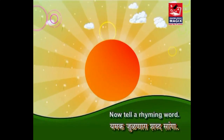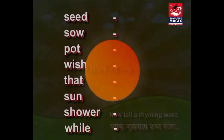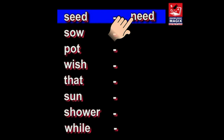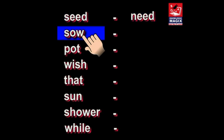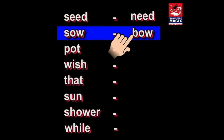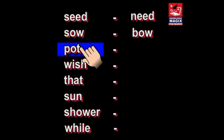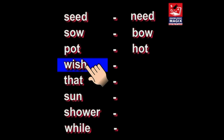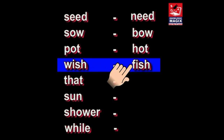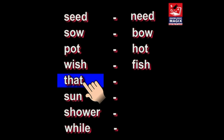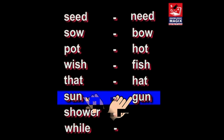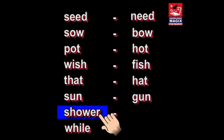Now, Tell a Rhyming Word. Seed — Sew, Bow. Pot — Pot. Wish — Fish. That — Hat. Sun — Garn. Shower — Flower.